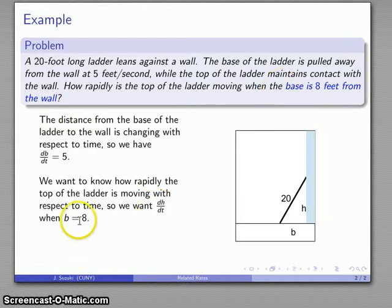And in particular I'm interested in that value when the base is 8 feet from the wall, when b is equal to 8. Now remember b is a variable so I'm not going to substitute this value in until the very end of the process.